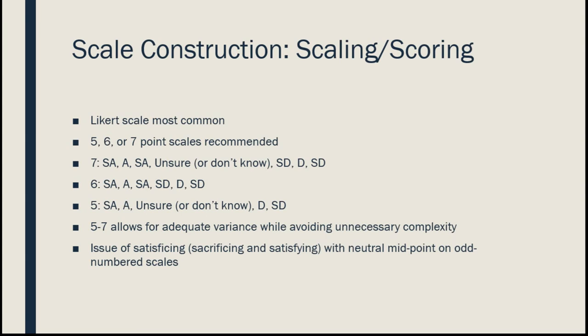Now that we've identified the best items, we need to make them into our scale. One thing we need to decide is the Likert scale format. We generally recommend five, six, or seven point Likert scales. A seven-point example: strongly agree, agree, slightly agree, unsure, slightly disagree, disagree, strongly disagree. The six-point scale removes the middle 'unsure' option. The five-point scale has: strongly agree, agree, unsure, disagree, strongly disagree.